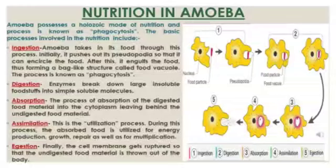First, there is a food particle, and the pseudopodia moves around the food particle — this process is called ingestion. Amoeba initially pushes out its pseudopodia to encircle and engulf the food, thus forming a bag-like structure called a food vacuole, as shown in the second step. This process is called phagocytosis.